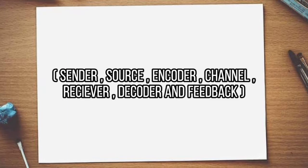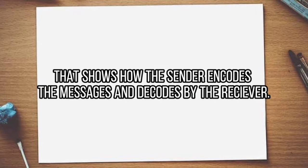There are sender, source, encoder, channel, receiver, decoder, and feedback that show how the sender encodes the message and decodes by the receiver.